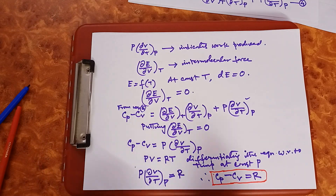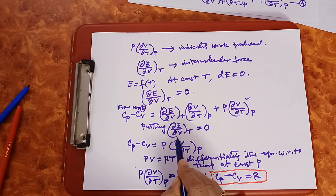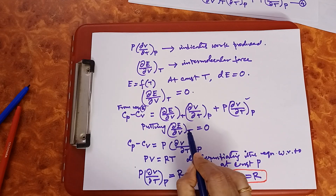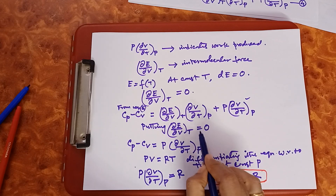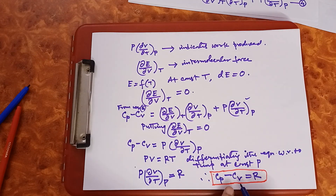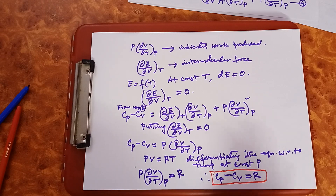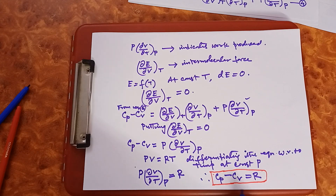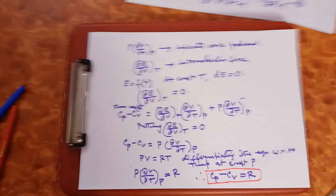This equation holds good for ideal gas, since we used (∂E/∂V)_T = 0, which is valid for ideal gas. The relation between heat capacity at constant pressure and heat capacity at constant volume is Cp minus Cv equals the universal gas constant R. Thank you.